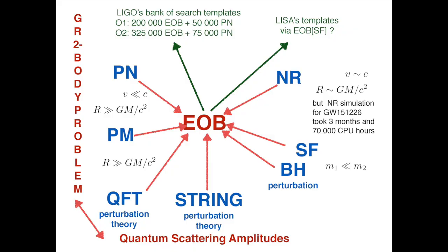Let me mention the link between quantum scattering amplitudes. Up to now I said we have an ultra-classical problem — the motion of two black holes, how they interact with spin or without spin. These objects have 30 times the mass of the sun, so quantum effects are negligible. But let us use quantum technology to compute this Hamiltonian.